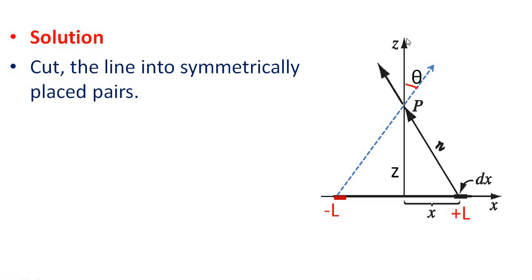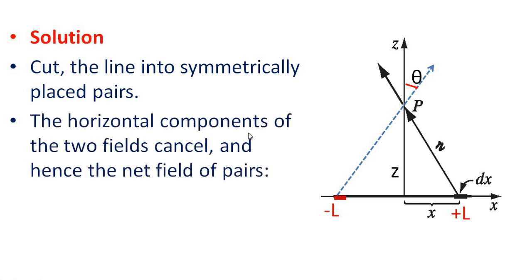Due to dx on the right side, there will be a dE in one direction, and due to dx on the left side, there will be dE in the opposite direction. Each makes an angle theta with the Z axis. The vertical component is dE cos theta and the horizontal component is dE sin theta. The two dE sin theta components cancel, and the vertical components dE cos theta add up.